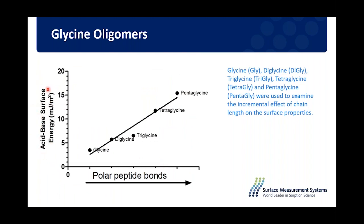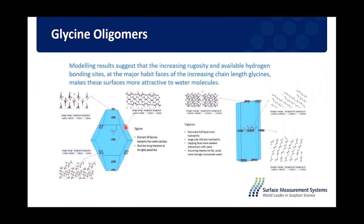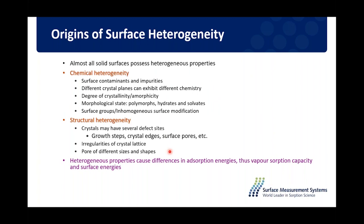The acid-base portion of surface energy plotted versus glycine chain length shows a clear increase in polar peptide bonds as chain length increases, explaining the increase in acid-base surface energy. This relates to the crystal structure of different glycine forms. Modeling suggests that increasing glycine chain length causes a change in which major crystal habits are exposed, resulting in more and more hydrophilic surfaces being exposed, which explains both the increase in polar nature and the increased sensitivity to moisture. This shows how surface energy can detect very subtle differences in surface chemistry.